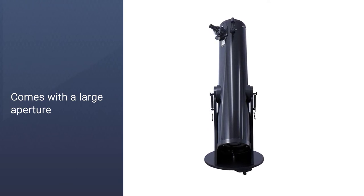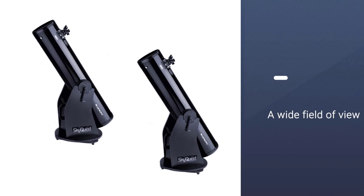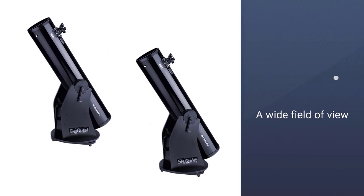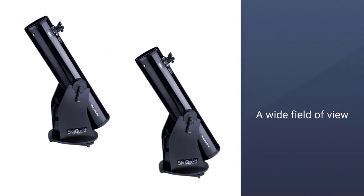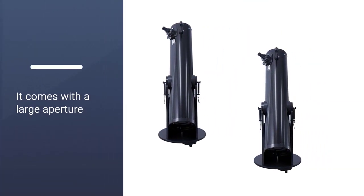The ultra-stable Dobsonian base perfectly keeps the reflector optical tube balanced for ease of use during point-and-view. It comes with a large aperture which gives a wide field of view when locating planets and galaxies that are very far away.